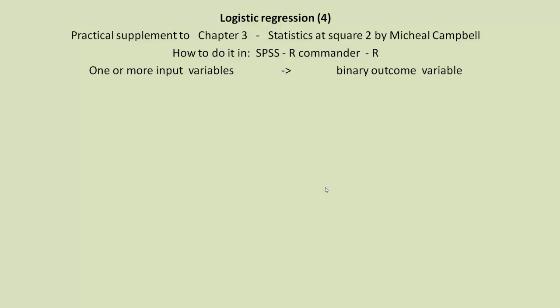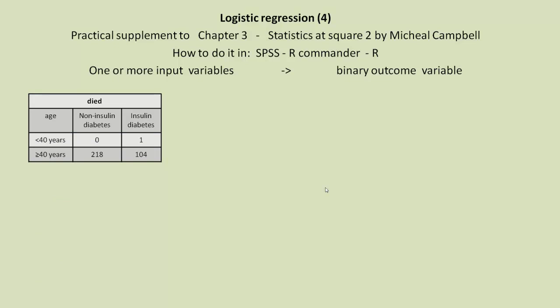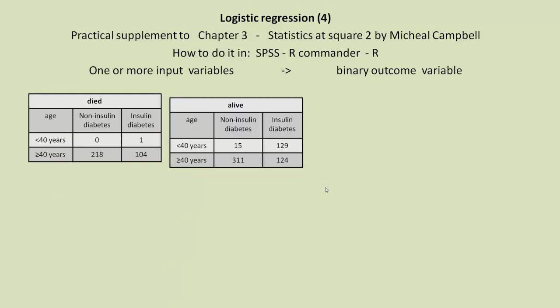We're looking at logistic regression where we have one or more input variables, independent variables, and one outcome variable which is always a binary variable in this instance. The example Michael Campbell gives is of people who have survived or died from diabetes of two types: non-insulin-dependent diabetics or insulin-dependent diabetics. He also divided them into those less than 40 and those 40 and older.